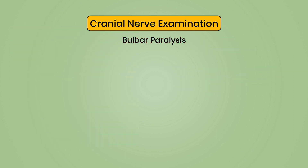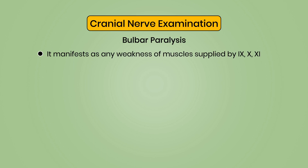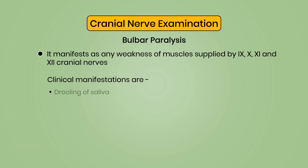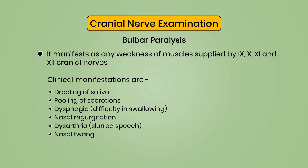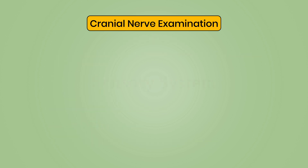Bulbar paralysis manifests as weakness of muscles supplied by the ninth, tenth, eleventh, and twelfth cranial nerves. Clinical manifestations include drooling of saliva, pooling of secretions, dysphagia, nasal regurgitation, dysarthria or slurred speech, nasal twang, and involvement of respiratory and vasomotor centers.